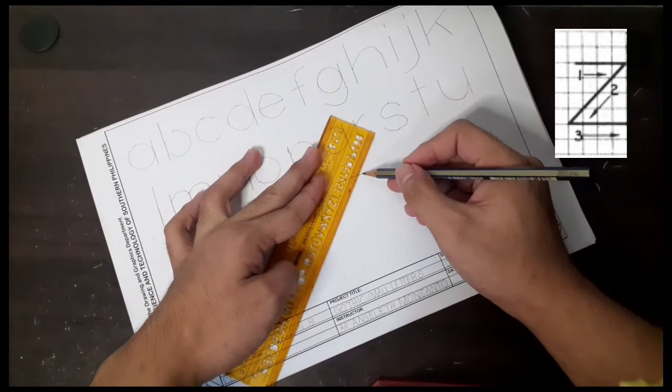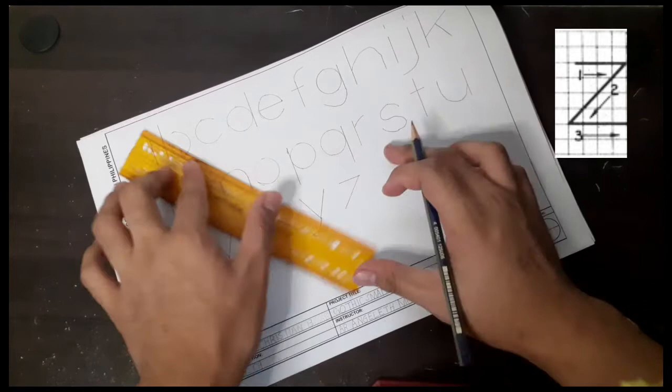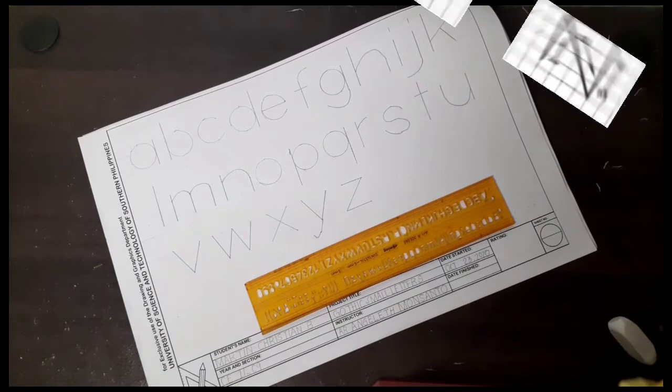Lastly, for small letter Z, a horizontal line is written first from left to right, then a slanting line going to the left. Then another horizontal line from left to right.